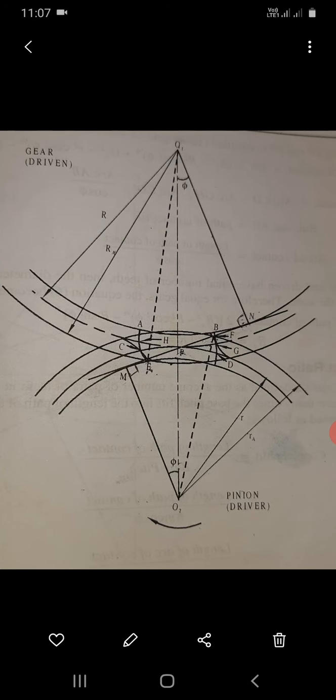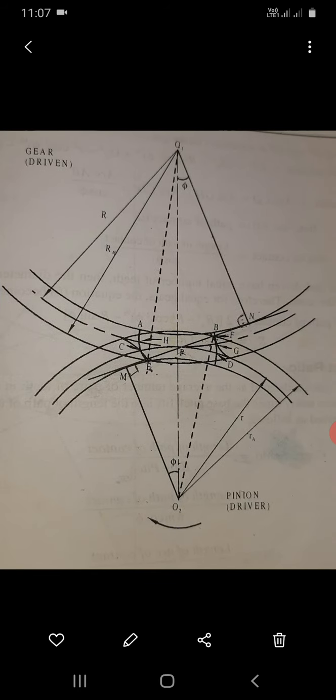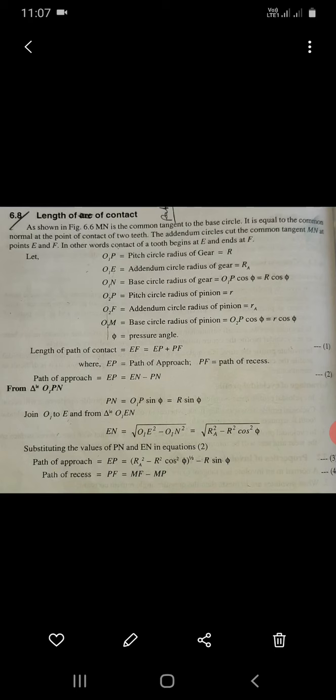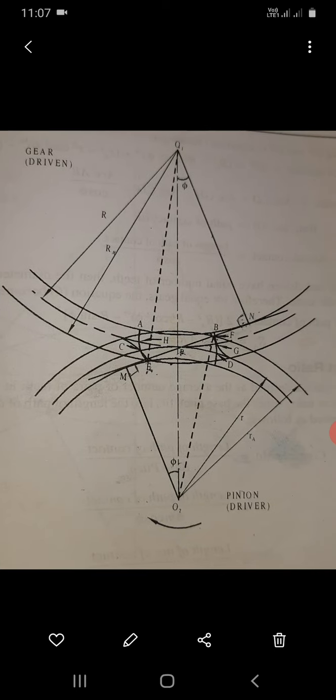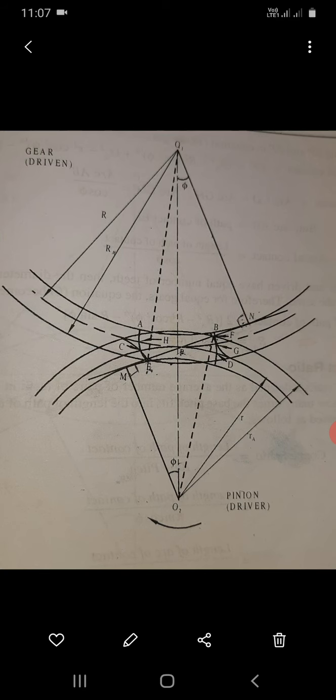At E and F, the point of contact begins at E. Where P is the pitch radius of gear, Ra is the addendum circle radius of gear, Rb is the base radius of gear. O2P is for the pinion - r is the smaller pitch radius, ra is the addendum circle radius, rb is the base radius. Phi is the pressure angle. The path of contact EF equals EP plus PF.